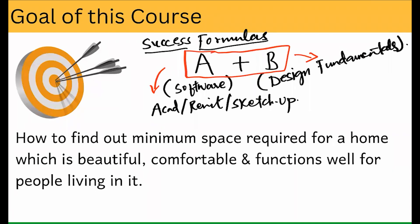Without B, you will be dependent — कि कोई और बंदा design करेगा और आप उसको सिर्फ tool में बना के दे दोगे with precision. Now, you take the high success formula — it is A plus B. आप software पे ऐसे practice कीजिए — you should be a master of the software. Minimum time में without errors आपके 2D और 3D models बनने चाहिए. और आप इस software skills को जोड़ दीजिए — इस master class में जो सिखा रहा हूँ — in seven easy steps आप ये design fundamentals सीखें, space design के.